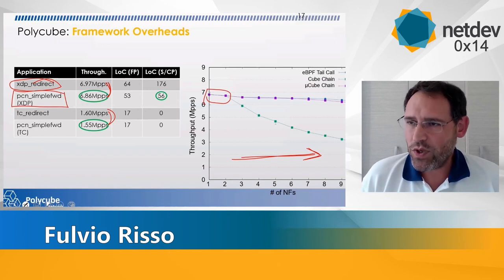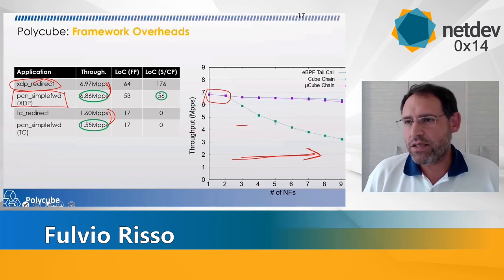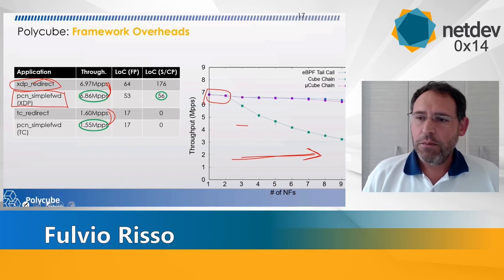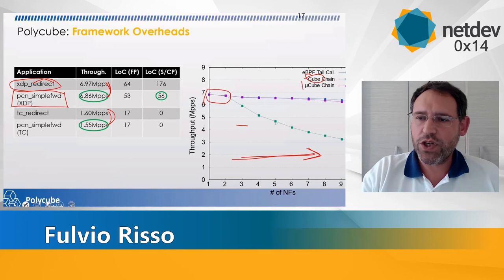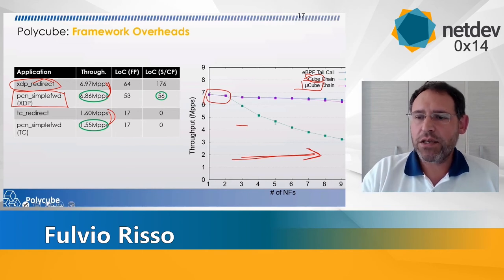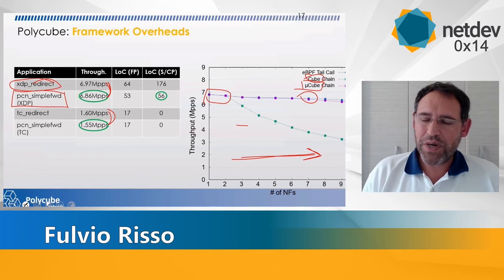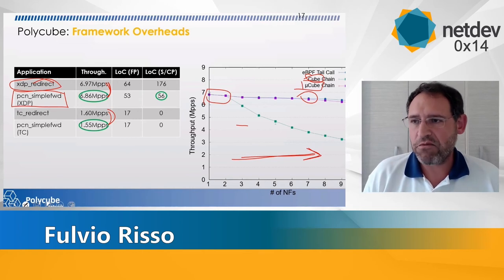The difference becomes larger if you run a long chain of network functions. Once you have one or two network functions, basically there is no difference. Once you go larger in terms of service chain, the difference becomes more substantial. But we don't expect service chains to be much longer than two or three, which is really enough. Also note that each network function — each cube — can be split internally into many eBPF programs called microcubes. The firewall we have is built this way, and in this case there is no overhead, because the pre and post processors are just before and after the whole network function, not inside it.